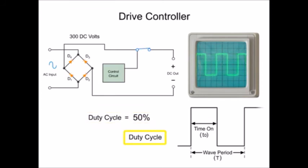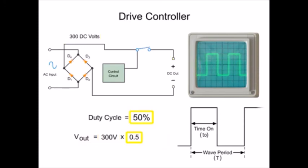Multiplying the duty cycle times the input voltage will give you the voltage output. In this example, a 300 volt input will be modulated by 50%, so the final voltage delivered to the load or motor is 150 volts.